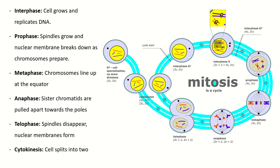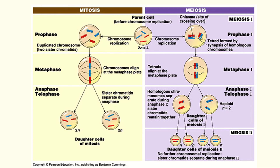In telophase, the spindles disappear. Nuclear membranes begin to form around our now duplicated nuclei — we have two nuclei where we previously had one. Cytokinesis is not part of mitosis strictly; it's the phase immediately after, when the cell splits into two. So to summarize: interphase — cell grows, DNA replicates; prophase — nuclear membrane breaks down, chromosomes get ready; metaphase — they line up; anaphase — they're pulled towards the poles; telophase — they're now at the poles and we form two new nuclear membranes.